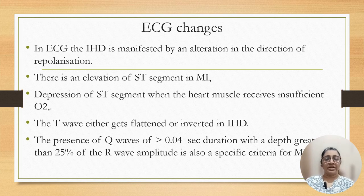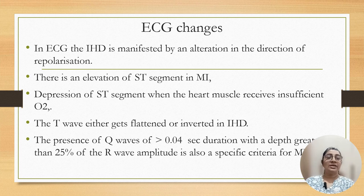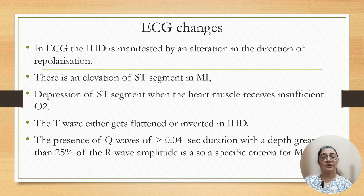How can we identify a heart attack? There are some criteria on ECG. Ischemic heart disease is manifested by alteration in the direction of repolarization. There is elevation of the ST segment in myocardial infarction and depression of the ST segment when the heart muscle receives insufficient oxygen supply. The T wave gets flattened in ischemic heart disease, and presence of a Q wave more than 0.04 seconds duration with depth greater than 25 percent of R wave amplitude is the specific ECG criteria for myocardial infarction.